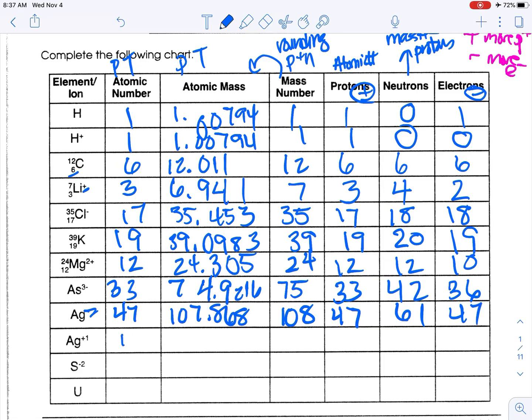Silver again — all the values would be the same: 47 atomic number, same mass, same protons and neutrons — except for the charge. It says plus 1, which means we have one fewer electron. So if we have 47 protons, we have to have 46 electrons.